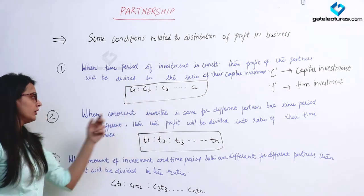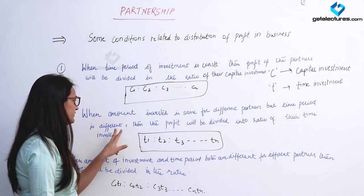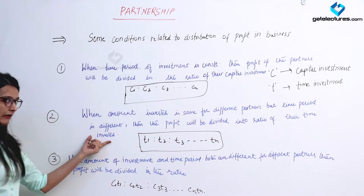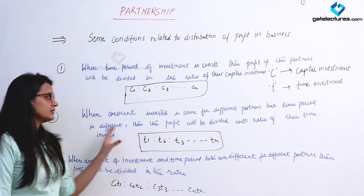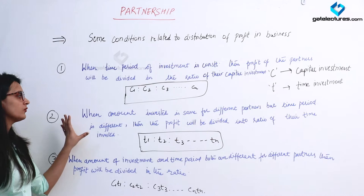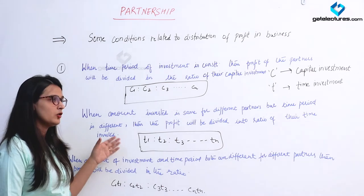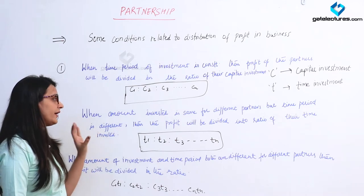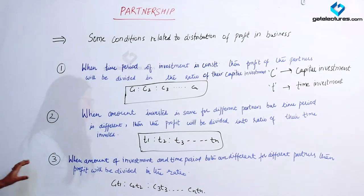The second condition: when the amount invested is the same for different partners but the time period is different, then the profit will be divided in the ratio of their time invested. For example, if three partners each invest Rs. 100 but for different durations — 2 months, 3 months, and 4 months — the profit divides in ratio T1 : T2 : T3.